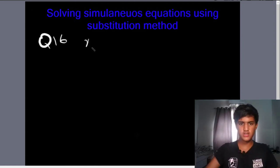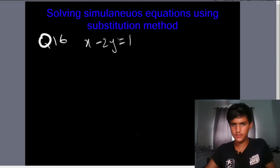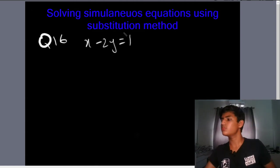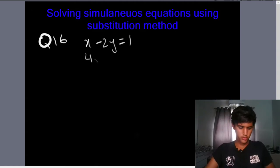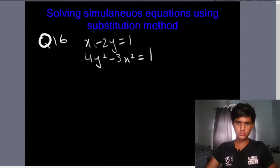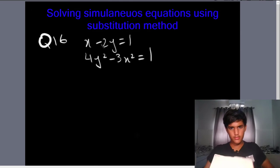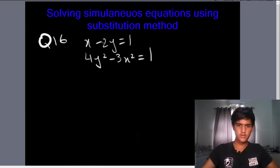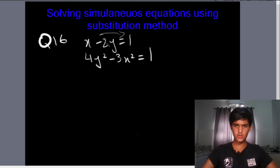The question is: x minus 2y is equal to 1, and 4y squared minus 3x squared is equal to 1. We can make x the subject in the first equation.